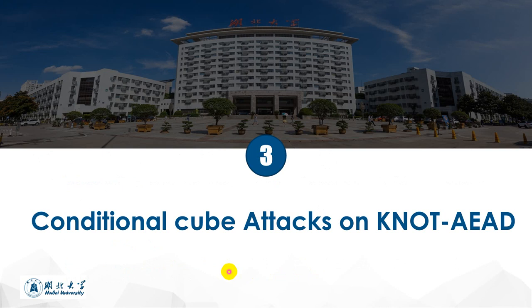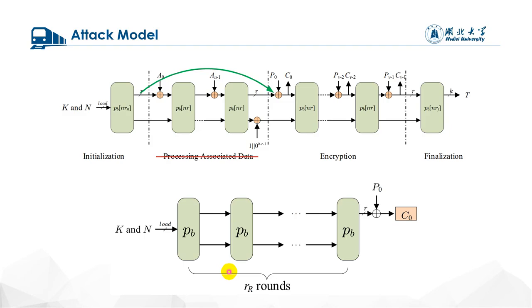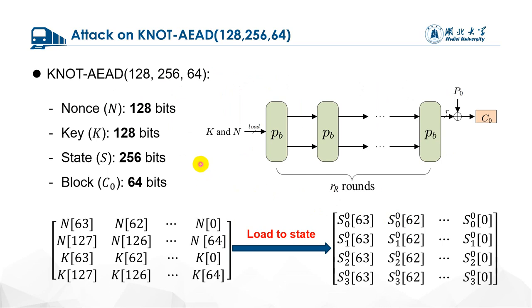In third part, we will apply the improved framework to KNOT-AEAD. Our attacks are launched at the initialization phase in the nonce-respecting setting, and there is no associated data. That is to say, after some iteration in the initialization phase, the r-bit state is XORed with the first plaintext P_0, and the corresponding ciphertext C_0 is generated. We will utilize this ciphertext to obtain the cube sum.